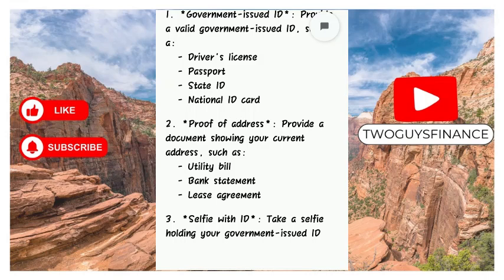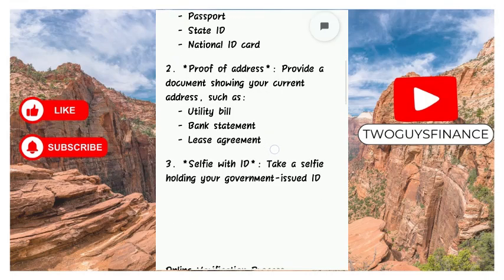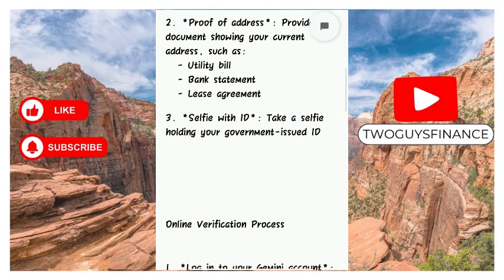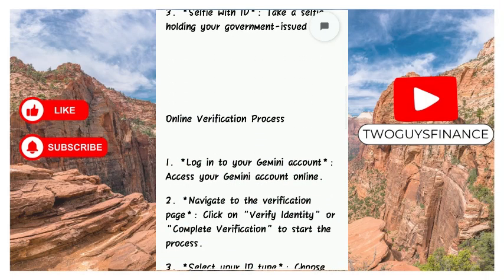For proof of address, it could be a utility bill, bank statement, or lease agreement. You're also going to need a selfie with identification — you'll need to take a selfie holding your government issued identification card.